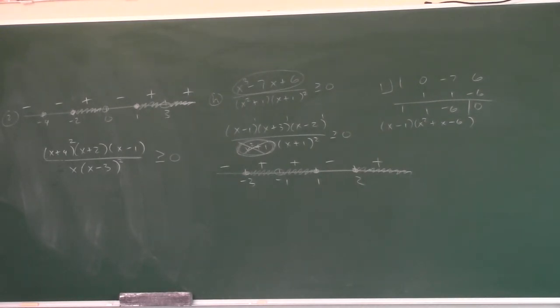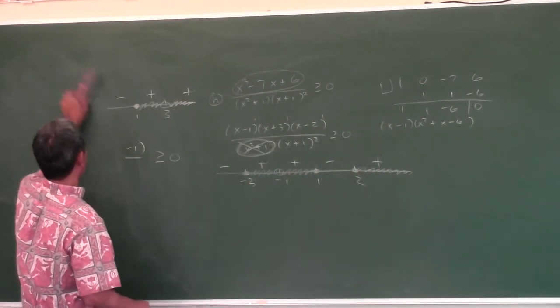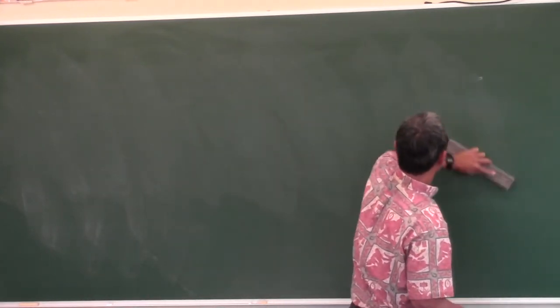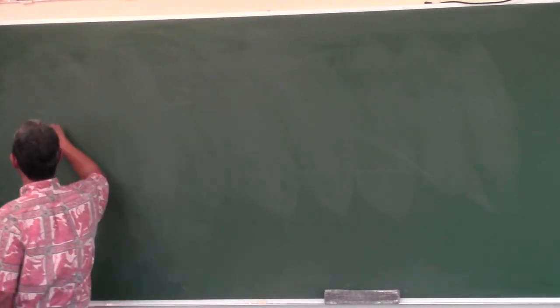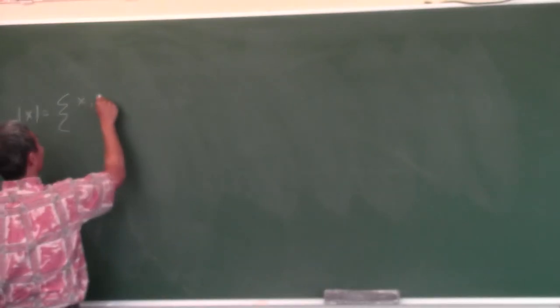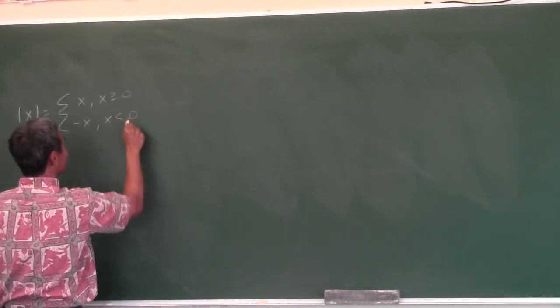Okay, today is the last lesson in this section on absolute values. This is the toughest one. So what is absolute value? This is the definition of the absolute value of x — it's a piecewise function. It's equal to x when x is greater than or equal to zero, and negative x when x is less than zero.